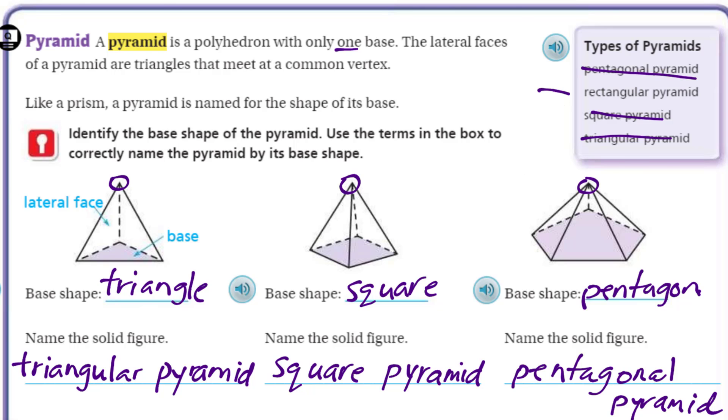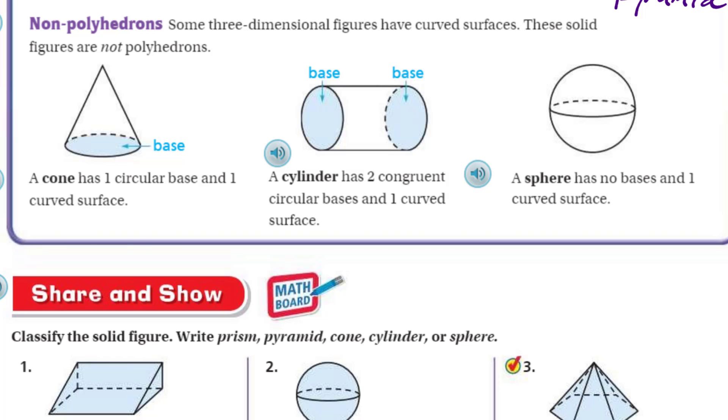Now we have something called non-polyhedrons—the ones that are not part of that cool group. Some three-dimensional figures have curved surfaces. These solid figures are not polyhedrons. The keyword is curved surfaces. A cone has one circular base and one curved surface. You can see this is a circular base, so it's curved when it meets—doesn't make a straight line because you have a circle. A cylinder has two congruent circular bases. Look at these two bases here and here. They're congruent, so they have to be the same, and they are circular. They also have one curved surface. A sphere has no bases and one curved surface, like our planet Earth.